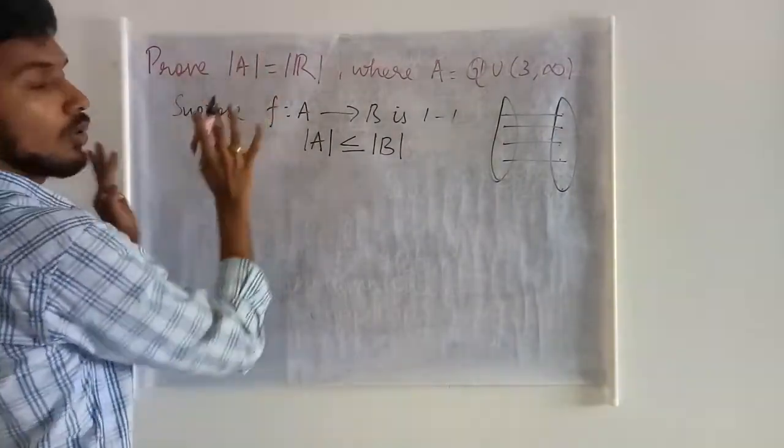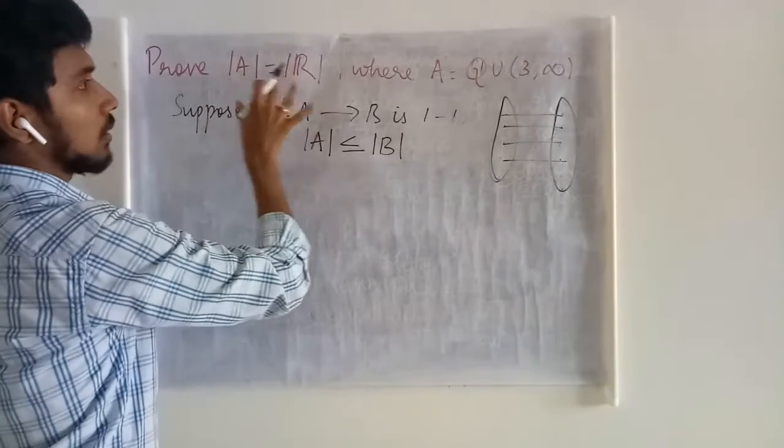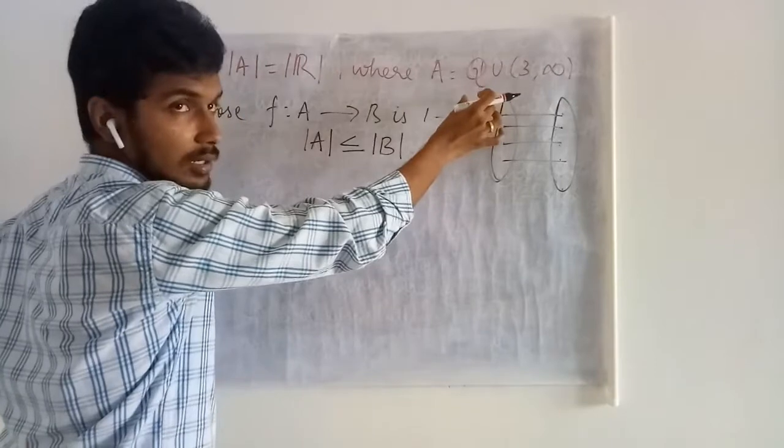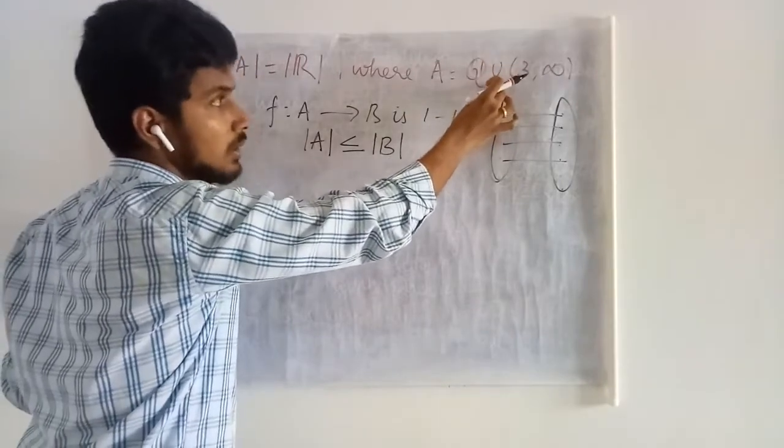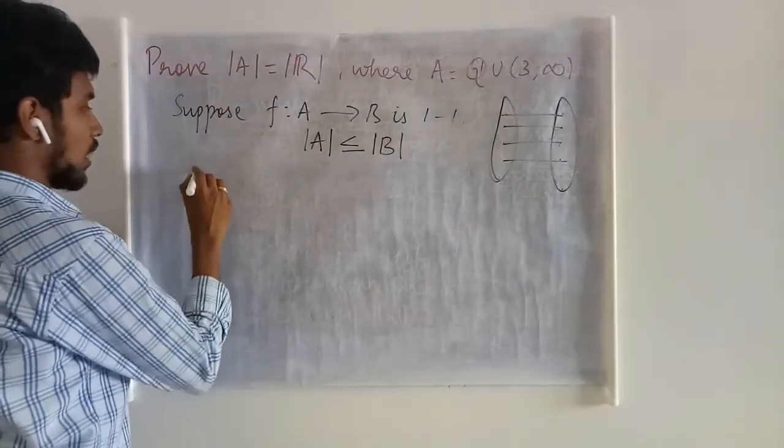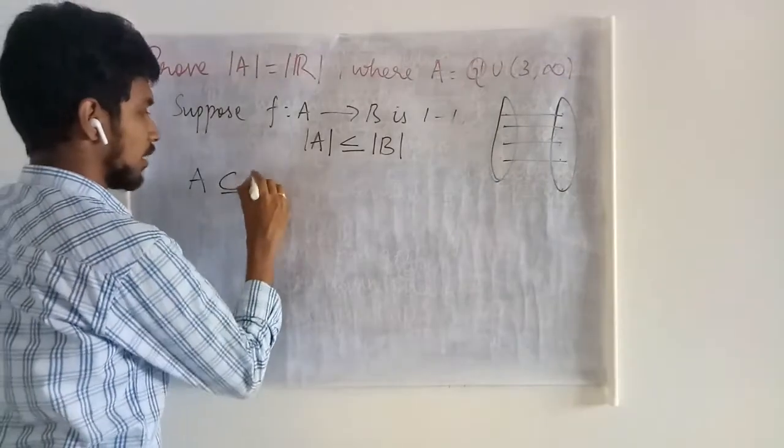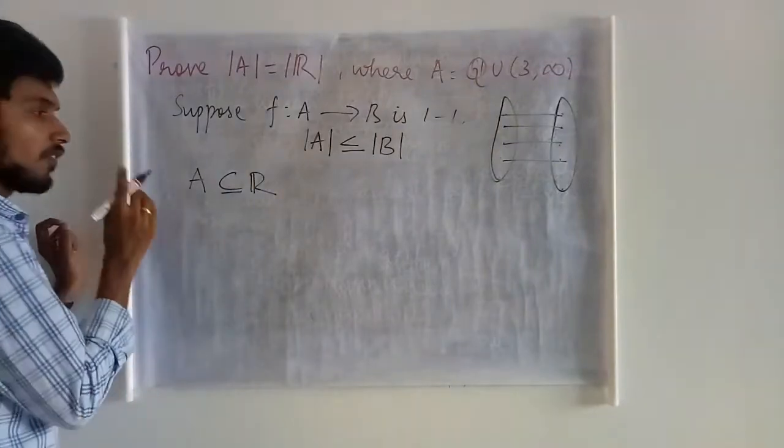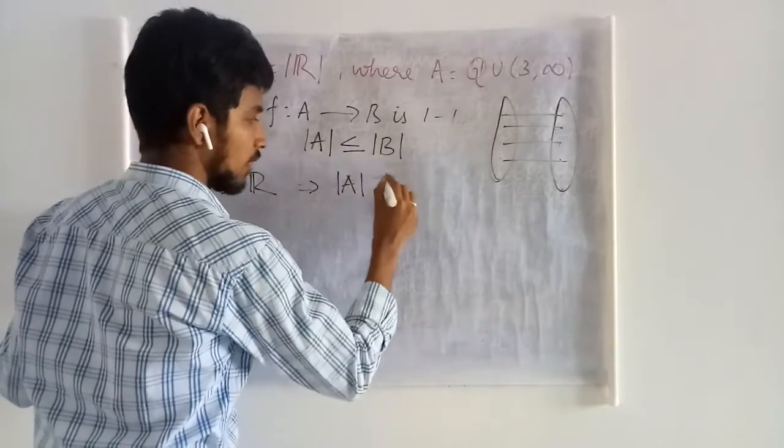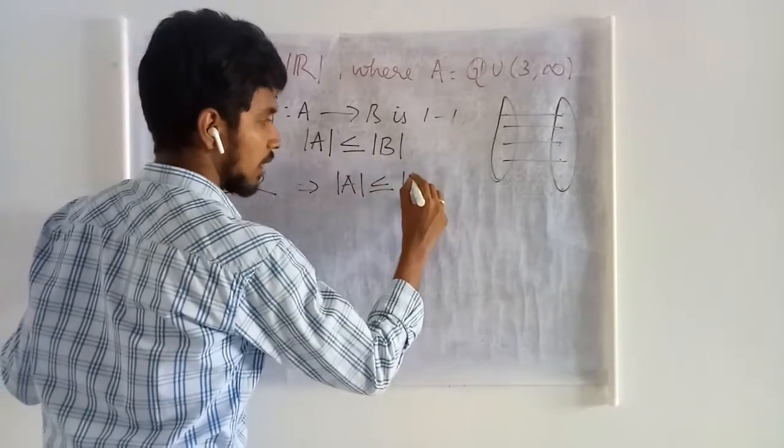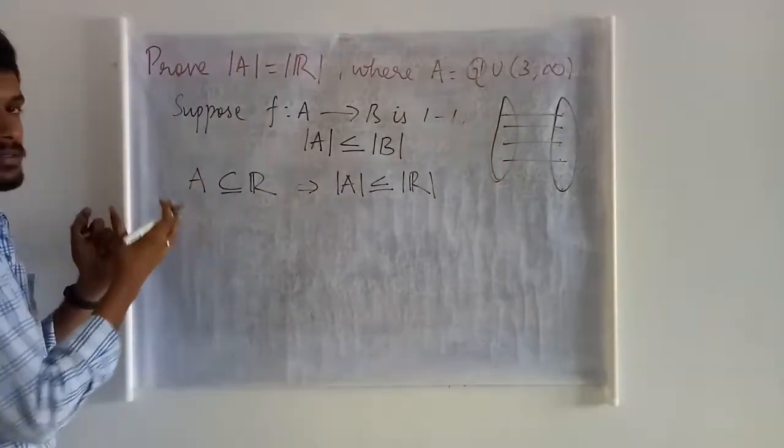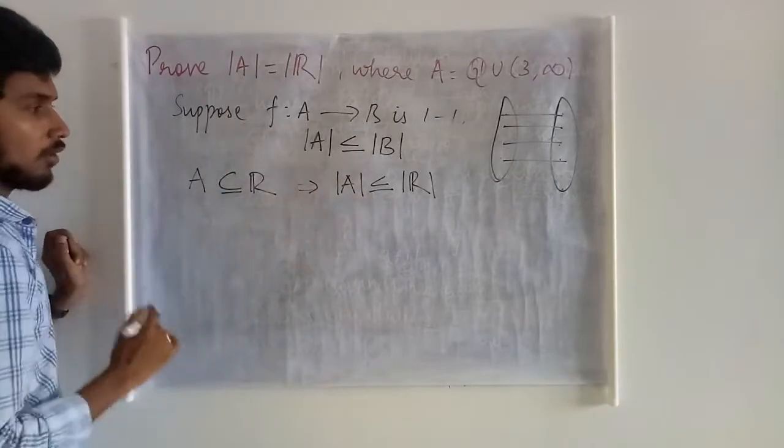Here, now, come to the given problem. Here, if you see, your A is the set of all rationals union with the interval (3, infinity), which means your A is a subset of R. And whenever you have this, this tells you the cardinality of A is less than or equals cardinality of R. This is this basic, synthetic result that we have.